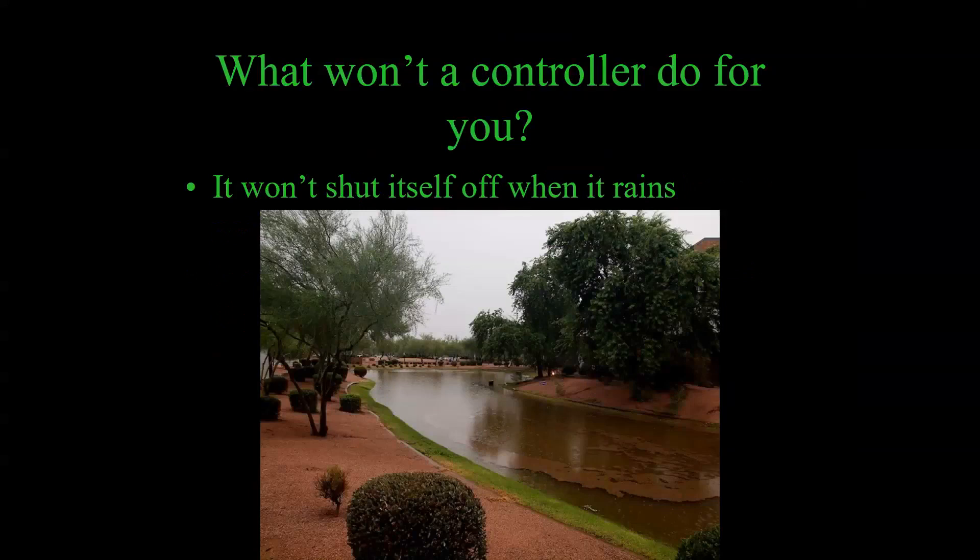The other thing a controller won't do is shut itself off when it rains. This picture is from outside my office at the town of Gilbert, back in September 2014 — that once-in-a-1,000-year rain event where all the retention basins were full and parts of the freeway flooded. You can set your controller to the off position and take it off auto, but you do have to go back out and turn it back on. Or you can install a rain sensor that will automatically recognize when it's rained and stop the controller from running any irrigation.